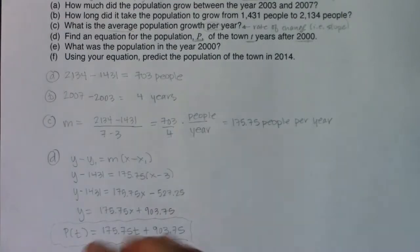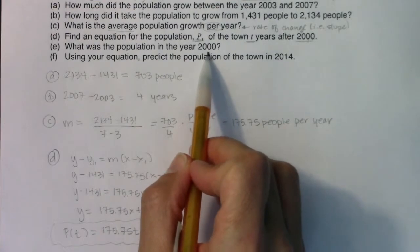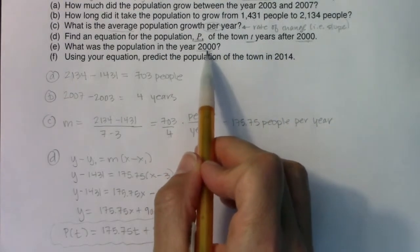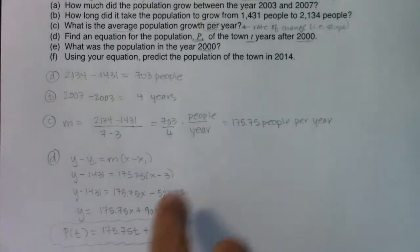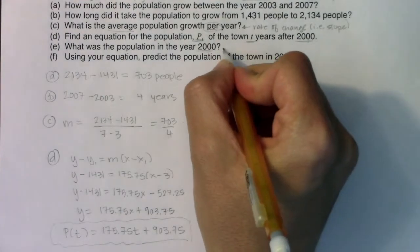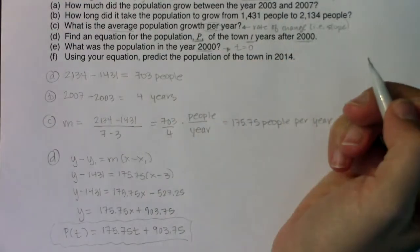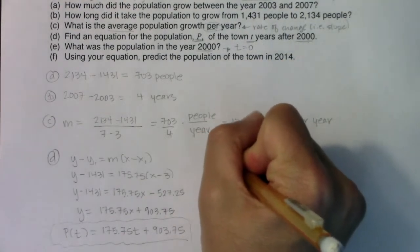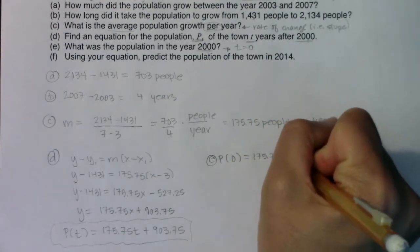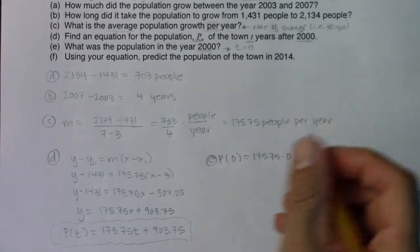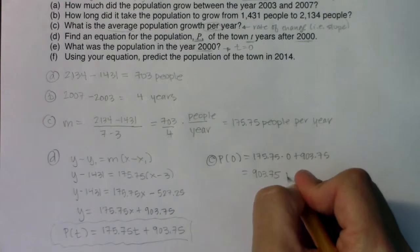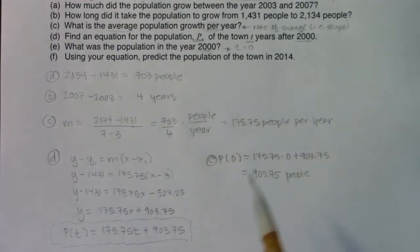Let's see what part E is saying. It says what was the population in the year 2000? Well, 2000, it's a time value, not a population value, so I'm going to plug that into for T. But you need to be careful. You don't want to plug 2000 in right here because T is years after 2000. So in 2000, that is quite literally zero years after 2000. For part E, I actually want to find P of zero, and that's going to be 175.75 times zero plus 903.75. In this case, it's just 903.75.